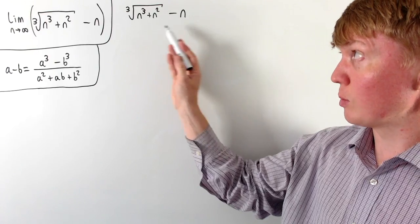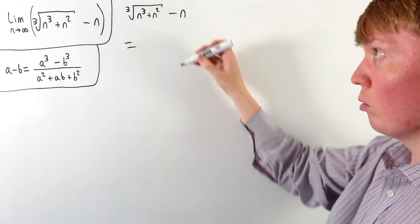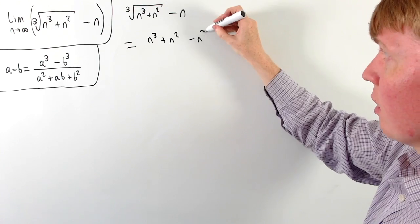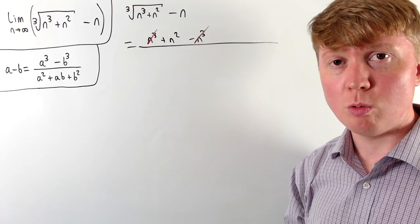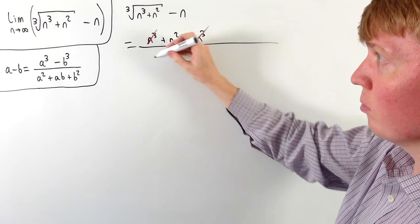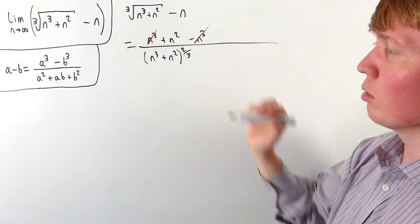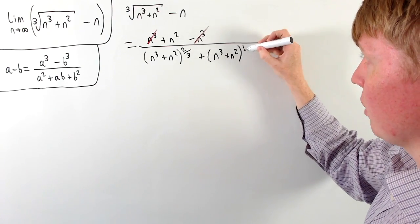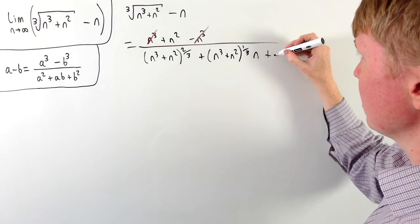Using this identity, we rewrite the difference: a cubed — cubing the cube root term — cancels the cube root, giving n cubed plus n squared, then subtract b cubed which is n cubed. The n cubes cancel, leaving n squared as our numerator. The denominator is more complicated: the a squared term is (n cubed plus n squared) to the power of two thirds; the ab term is (n cubed plus n squared) to the power of one third times n; and the b squared term is just plus n squared.